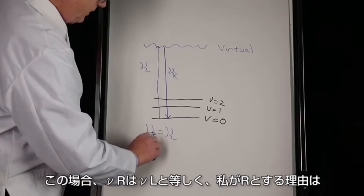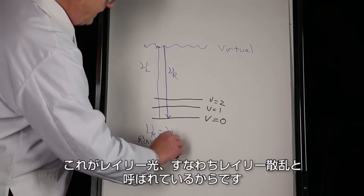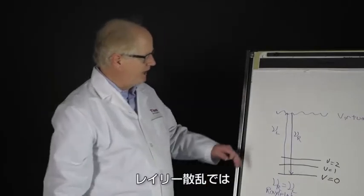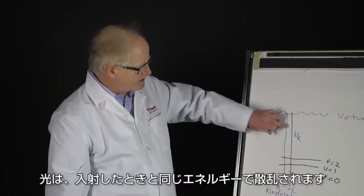In this case νR equals νL, and the reason I call it R is because this is called Rayleigh light or Rayleigh scattering.